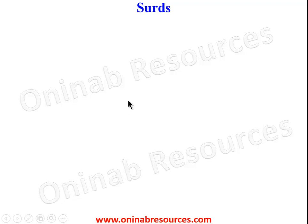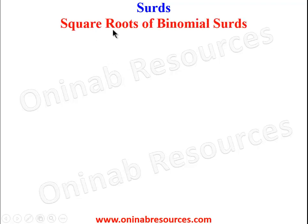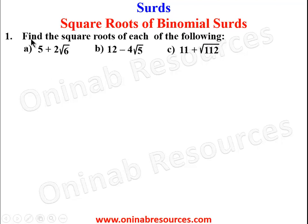Hello out there, welcome to this tutorial on surds. In this video we'll be looking at square roots of binomial surds. We start with problem one: find the square roots of each of the following — (a) 5 + 2√6, (b) 12 - 4√5, and (c) 11 - √112.